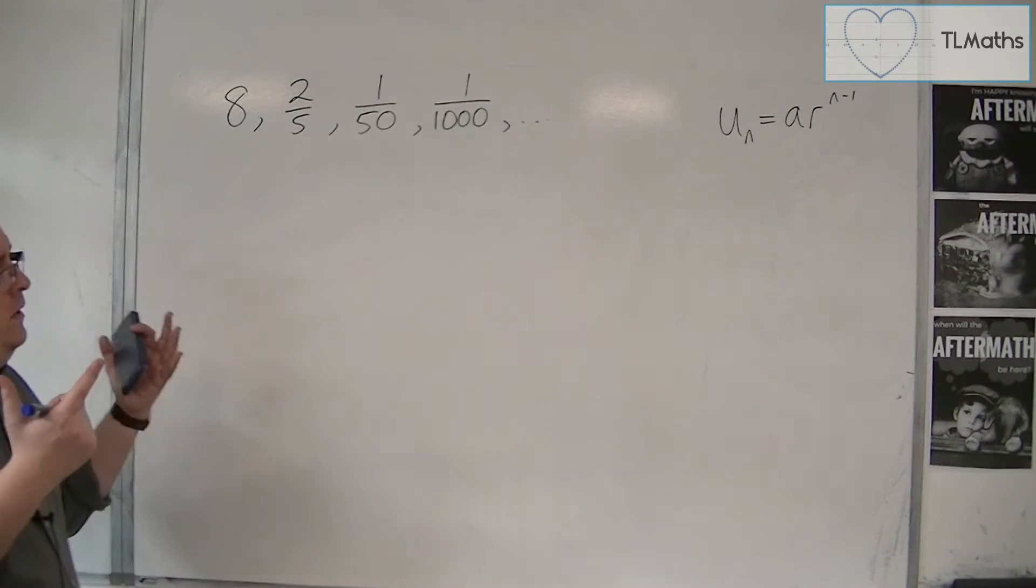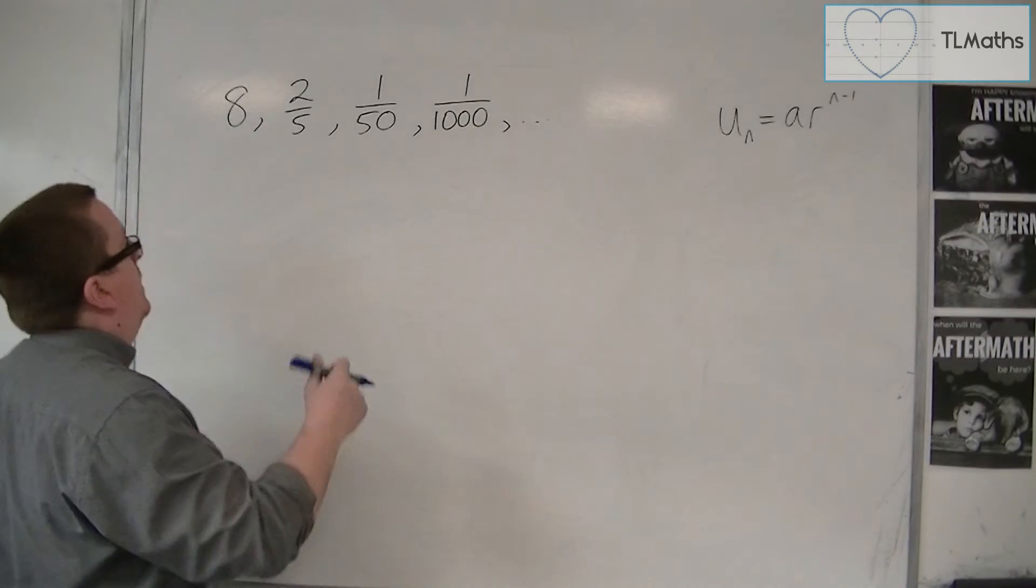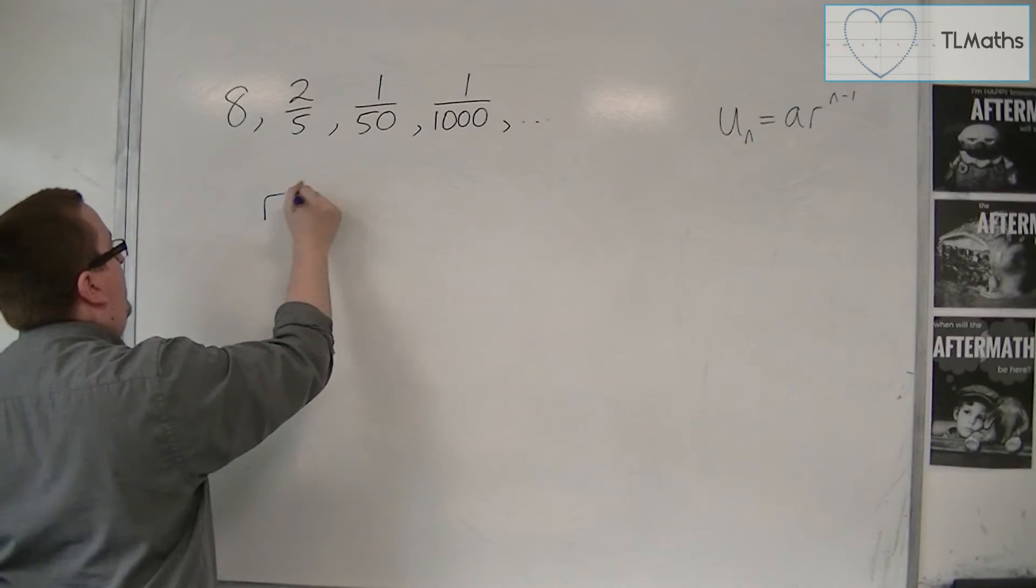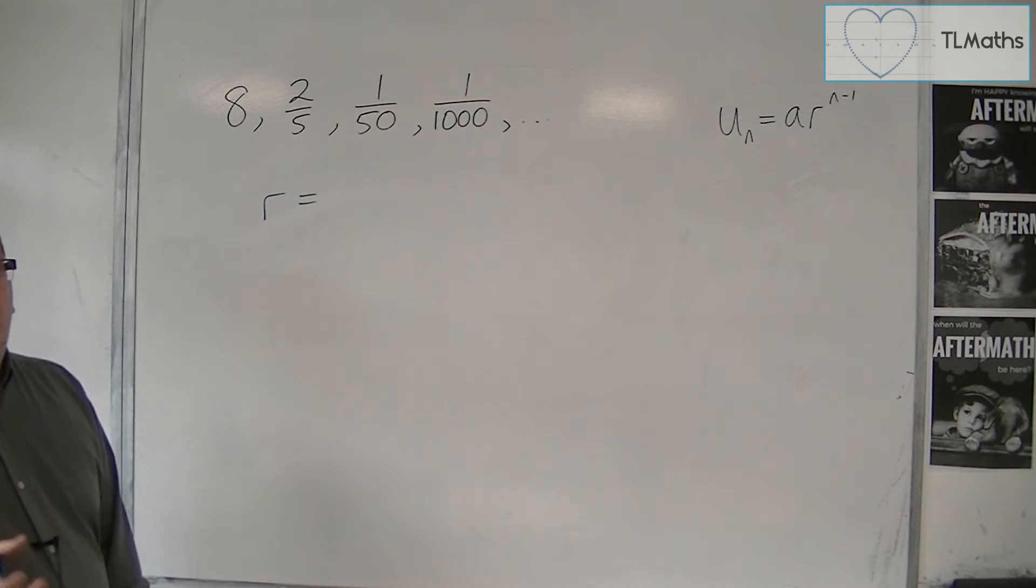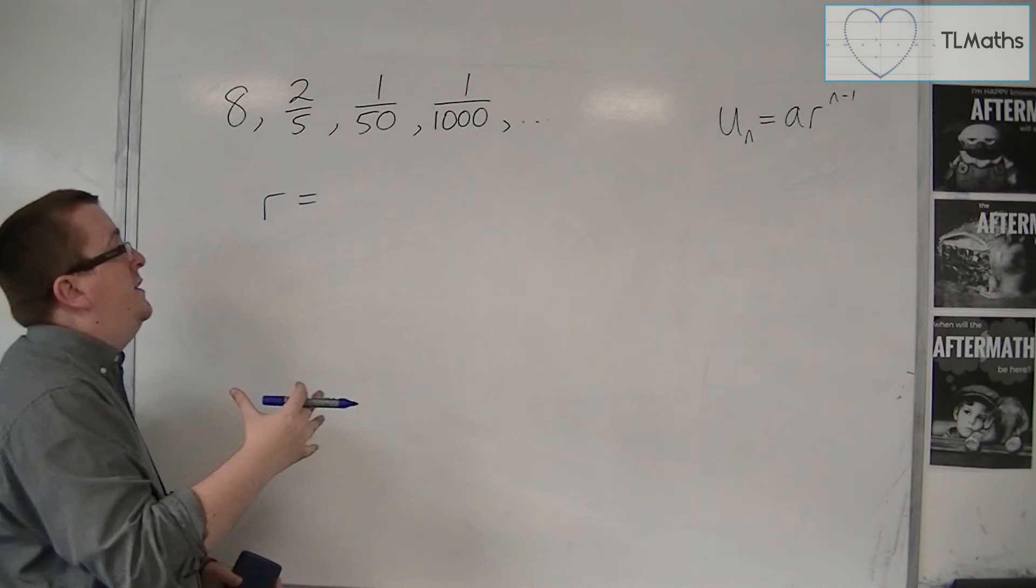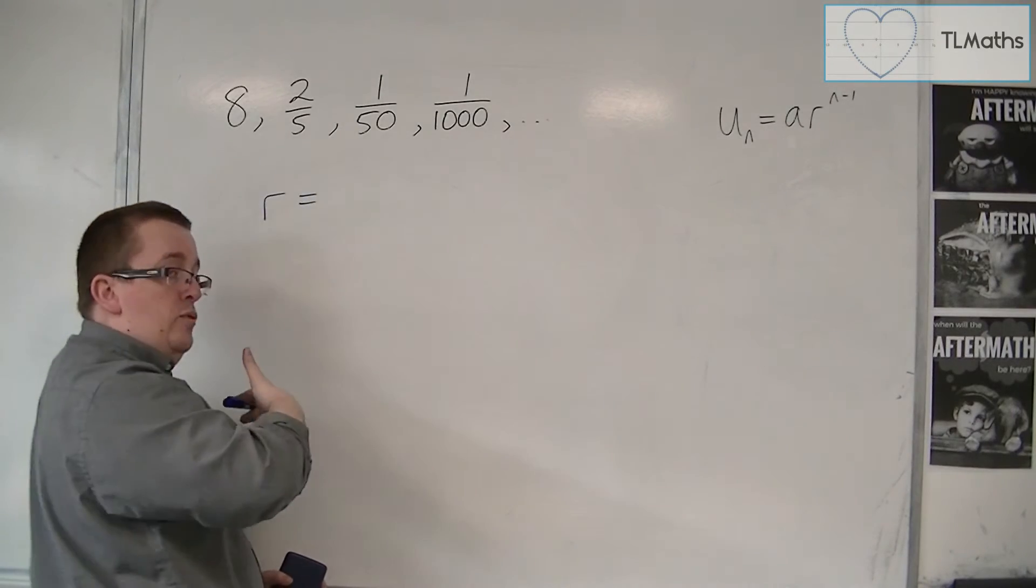So in that case, how do you work it out? Well, there's quite a nice, easy way of working out the common ratio. And all you need to do is to divide one number in the sequence by the previous term.